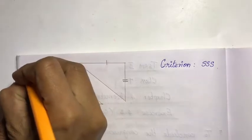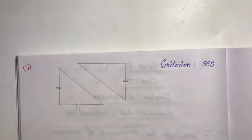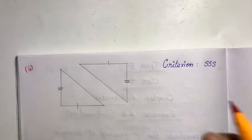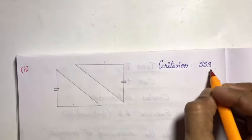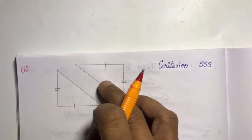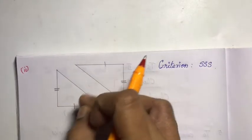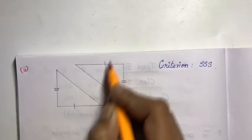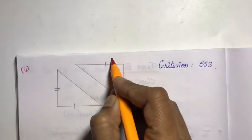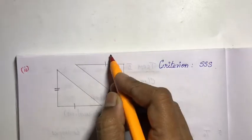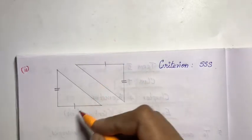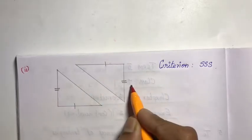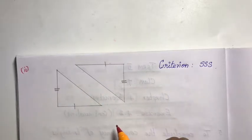Second one: the two triangles follow SSS criteria — that is, Side-Side-Side. All three corresponding sides must be equal. We need to mark the two sides that are given as equal in the figure.